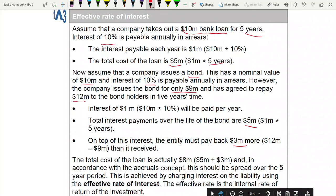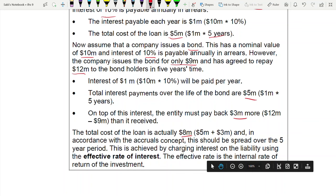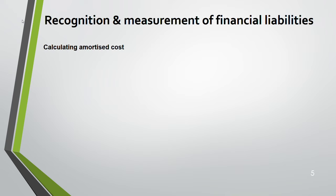Adding the 5 million interest and the 3 million difference gives 8 million — this is the total cost of the loan. According to the accrual concept, this should be spread over the five-year period. This is achieved by charging interest on the liability using the effective rate of interest, which is the internal rate of return — the IRR. In AFM we studied IRR in detail; it is the rate at which the net present value is zero.